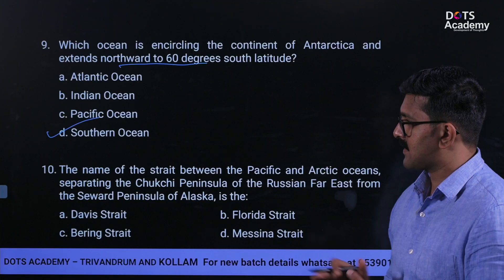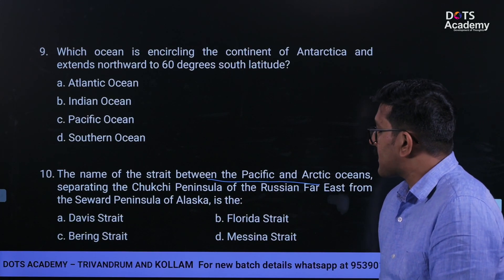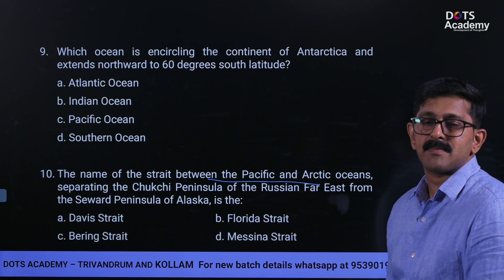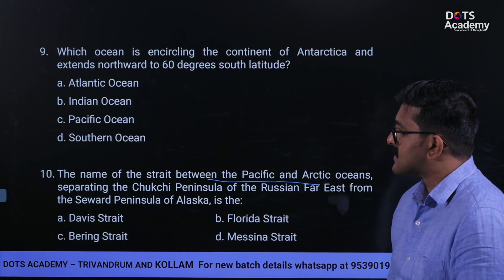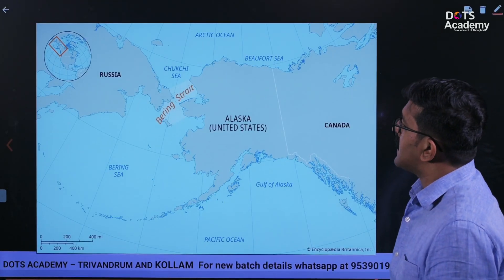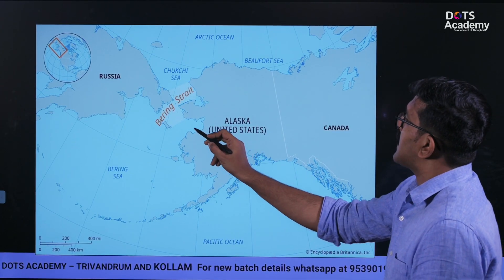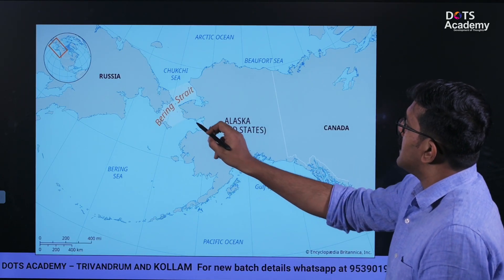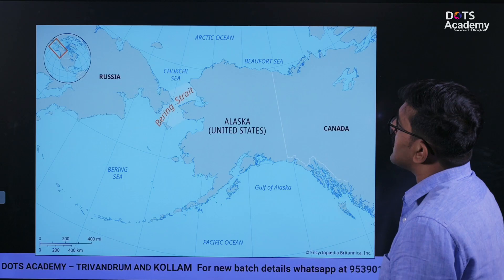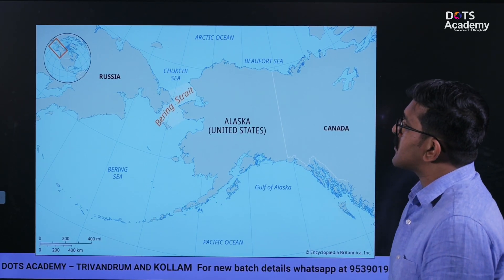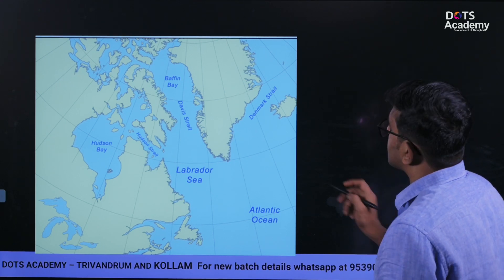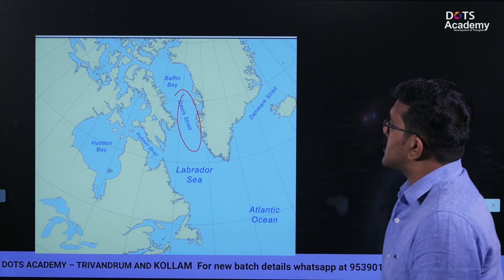The name of the strait between the Pacific and Arctic Oceans, separating the Chukchi Peninsula of the Russian Far East from the Seward Peninsula of Alaska, is what? It is the strait between North America and Asia. Options: Davis Strait, Florida Strait, Bering Strait, Messina Strait. The correct answer is Bering Strait. Davis Strait is located near Greenland, separating Greenland from Canada.